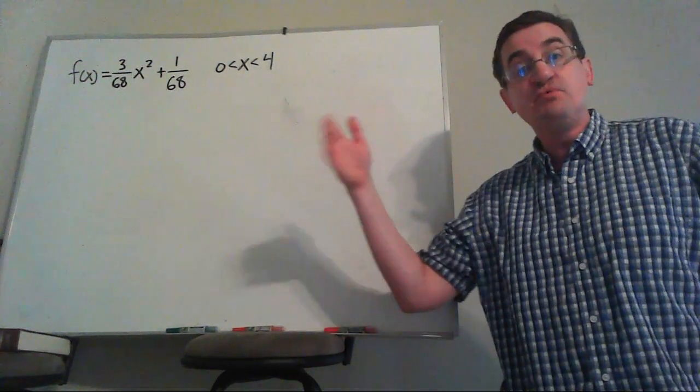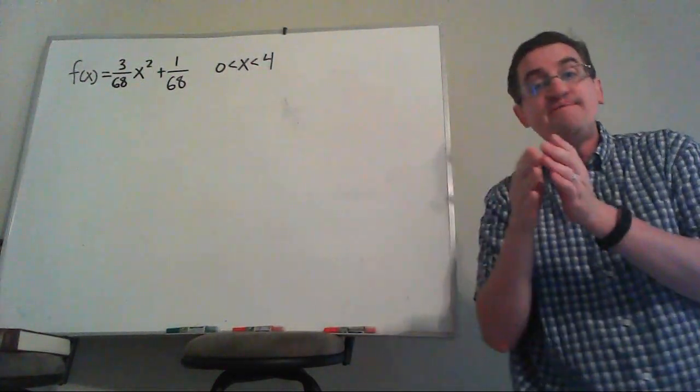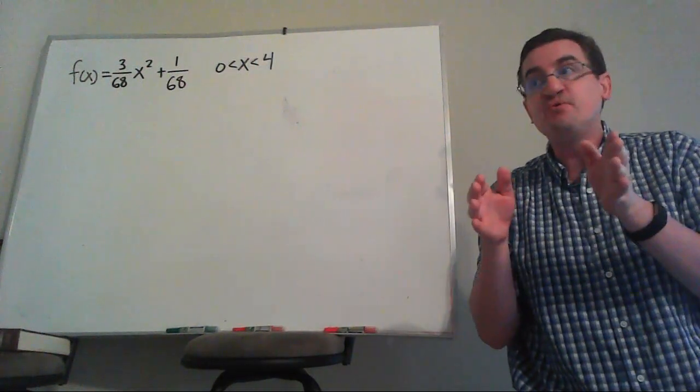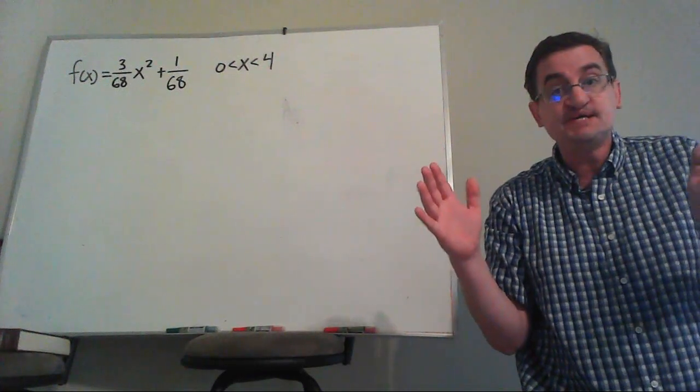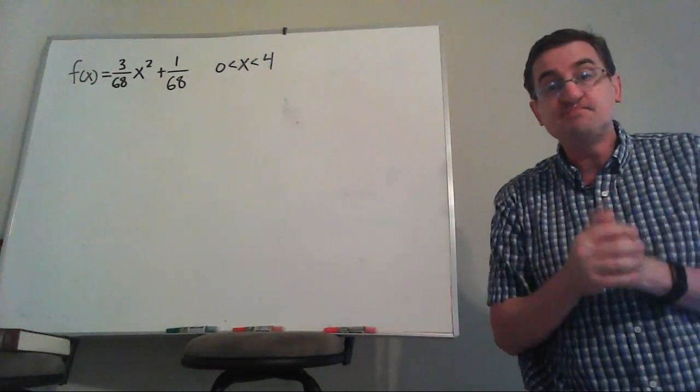It's not that you have 0, 1, 2, 3, 4 as your x values. You have everything in between there, like 2.5 or 2.578419. All the values of x are now part of this probability distribution.